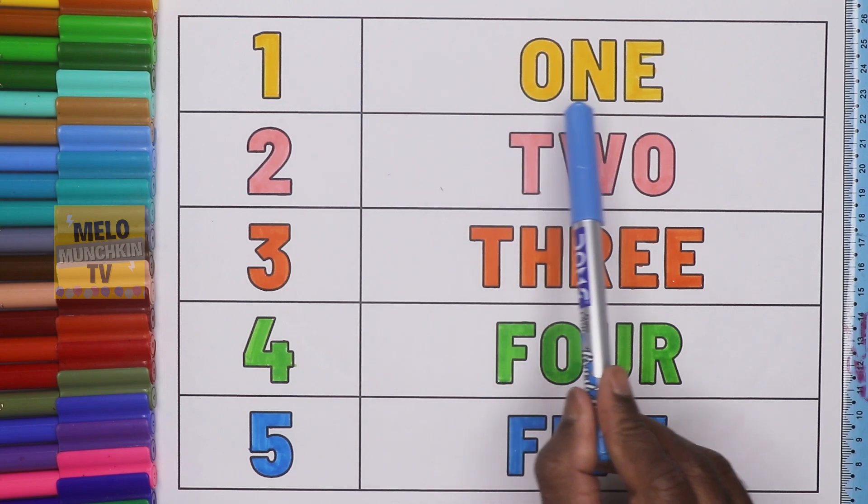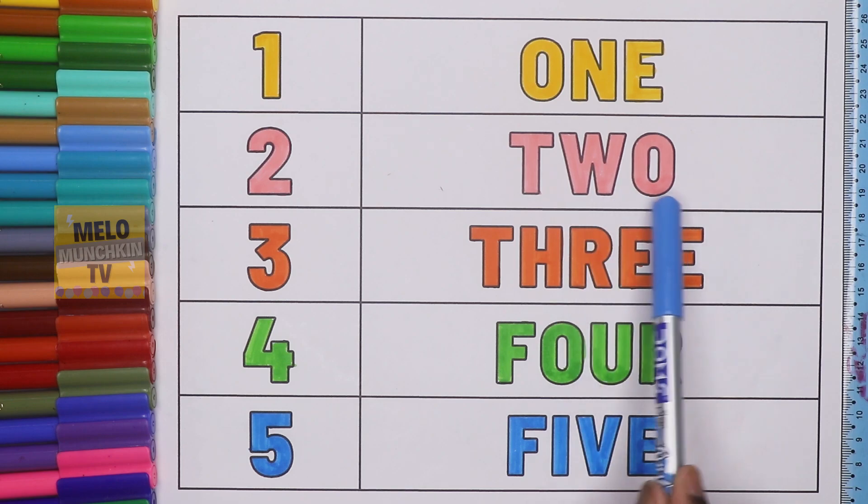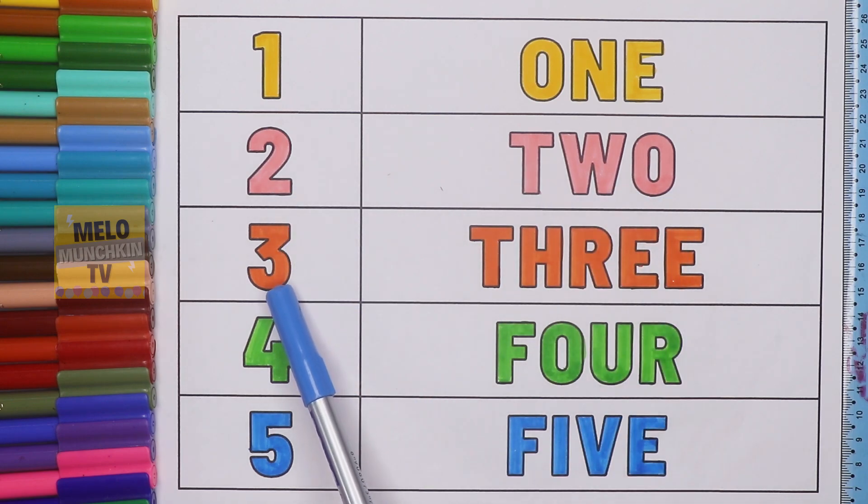This is number one, O-N-E, one. This is number two, T-W-O, two. This is number three, T-H-R-E-E, three. This is number four, F-O-U-R, four. This is number five, F-I-V-E, five.